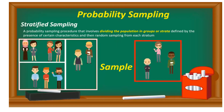Did you note the difference between cluster sampling and stratified sampling? With stratified sampling, the sample includes elements from each stratum. But with cluster sampling, the sample includes elements only from one selected cluster. That is the difference between stratified sampling and cluster sampling.